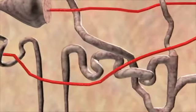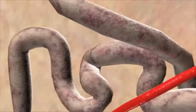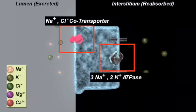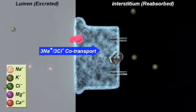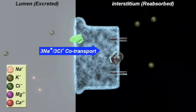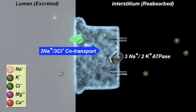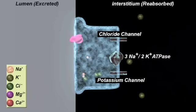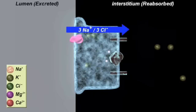The next site for diuretic action is the distal convoluted tubule. This is where the thiazide diuretics act. The transporters present in the distal convoluted tubule are slightly different than those in the ascending limb. In the distal convoluted tubule, the sodium chloride cotransporter replaces the sodium deficit caused by the sodium potassium ATPase. The chloride is reabsorbed through chloride channels, and the potassium returns to the interstitium through a potassium channel. This sequence results in overall sodium and chloride reabsorption.